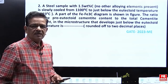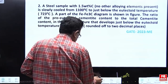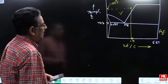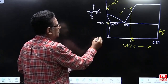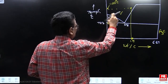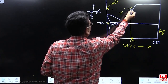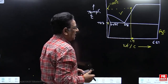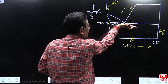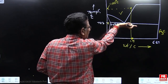Along with this information, a phase diagram is also given in the GATE 2023 Mechanical Engineering paper. The diagram shows the eutectoid temperature is 723 degrees centigrade, eutectoid composition is 0.8% carbon, and the steel sample with 1.5% weight percentage of carbon content is cooled from 1100 degrees centigrade down to just below eutectoid temperature, just below 723.